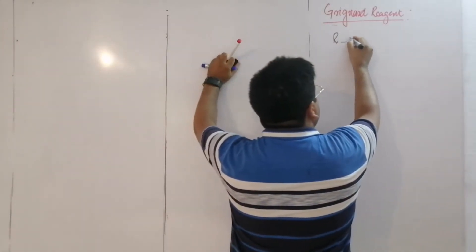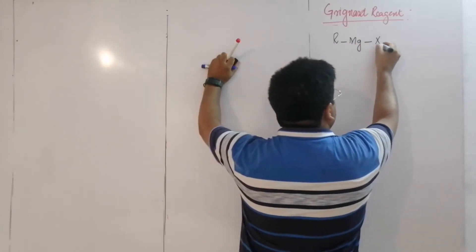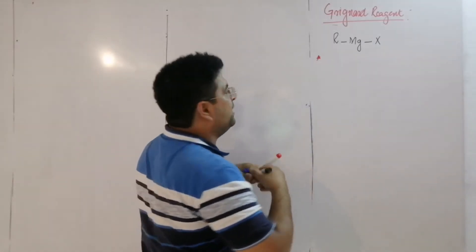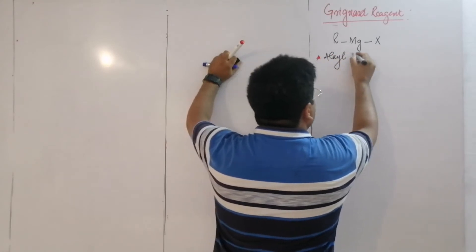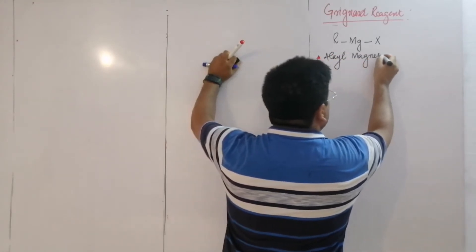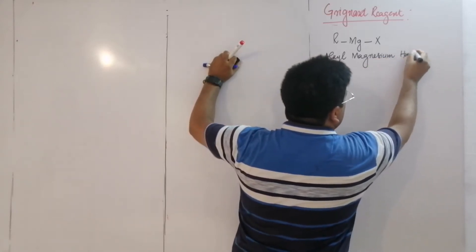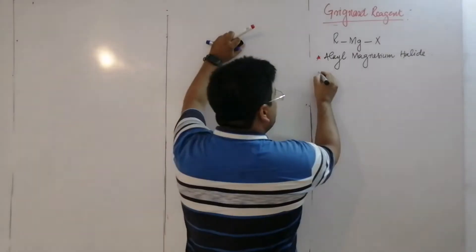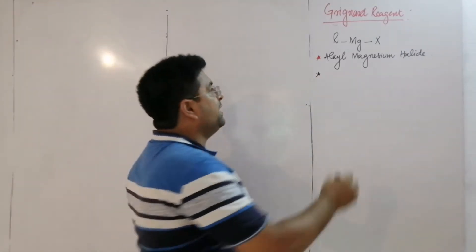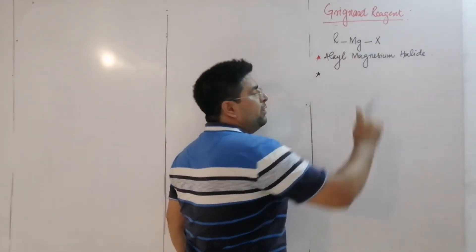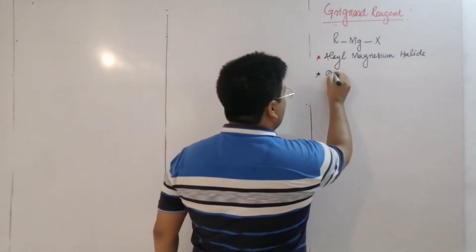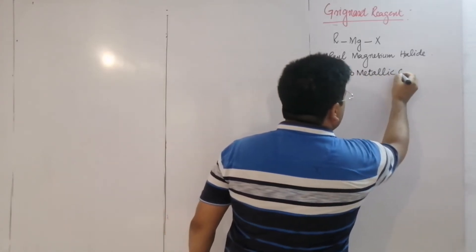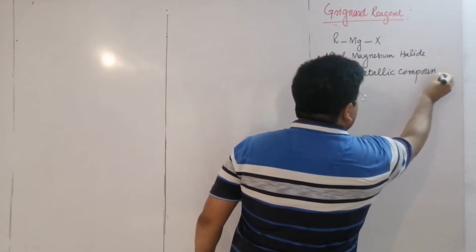Let us first write its structure. Alkyl Magnesium Halide — this is called Alkyl Magnesium Halide. In this, RX is an organic compound and Mg is a metal. We can say it is a class of Organometallic Compound.